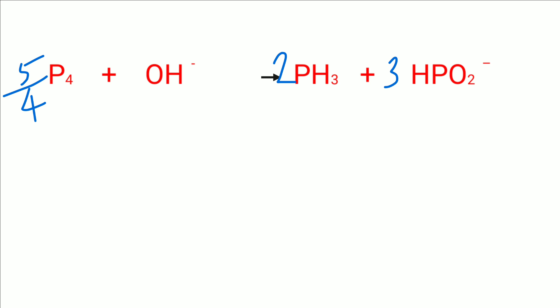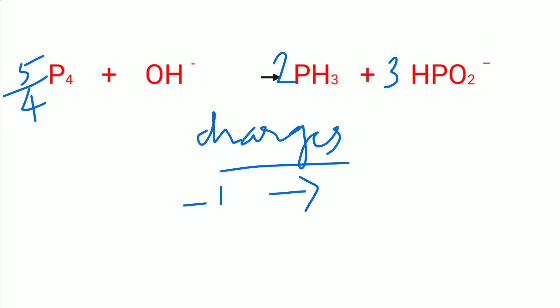Now we check the charges of the equation. On the left-hand side, P4 is neutral and OH⁻ has a charge of minus one. On the right-hand side, PH3 is neutral and hydrogen phosphite has a charge of minus one each; with three HPO2⁻ ions the total charge is minus three. The left-hand side charge is minus one but the right-hand side is minus three — the charges are not equal.